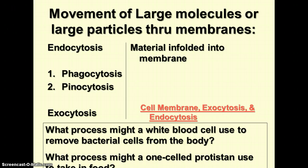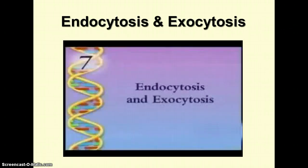The process that a white blood cell or a single-celled protist would use to bring things into the cell would be phagocytosis — bringing in solid materials inside the cell by folding the membrane inward. Please be sure to watch the other video link posted separately on Edmodo because it shows an excellent example of what happens with the cell membrane.